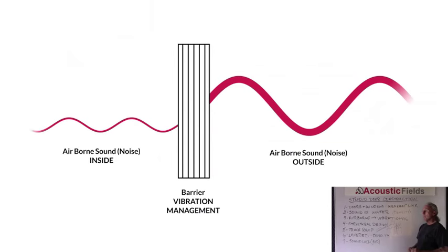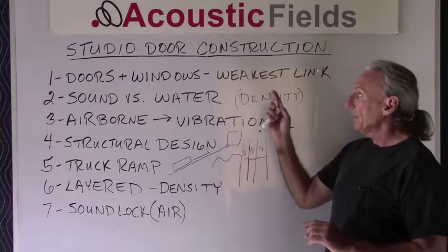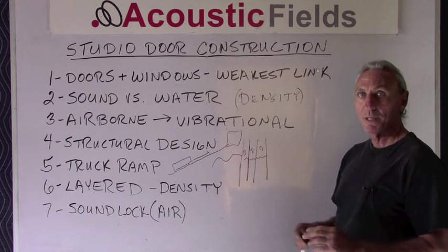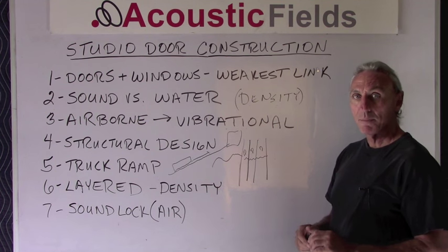In graphic number three we see that we're converting airborne energy into structural vibration — those take different sciences and different technologies to work with. Graphic four shows us that doors should be a layered combination. When you're dealing with vibration, you need layers of different materials. Keep all of this in mind when you're building your studio door construction. If you have any questions, feel free to contact me and I'll give you the benefits of all the building experience we've accumulated.